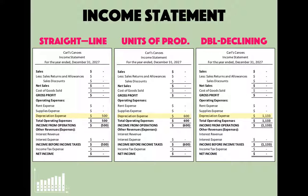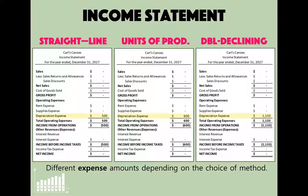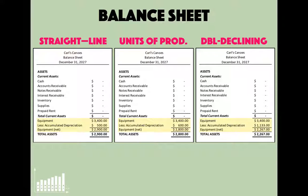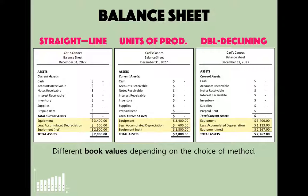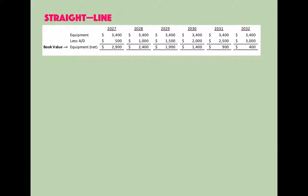On the income statement, double declining balance shows a much higher expense in year one than the other two methods. Different methods produce different expense amounts and therefore different book values. Under straight-line, year-one book value is $2,900; under units of production it's $2,800; under double declining it's $2,267. The choice of depreciation method matters — but all three methods eventually lead to the same ending point.